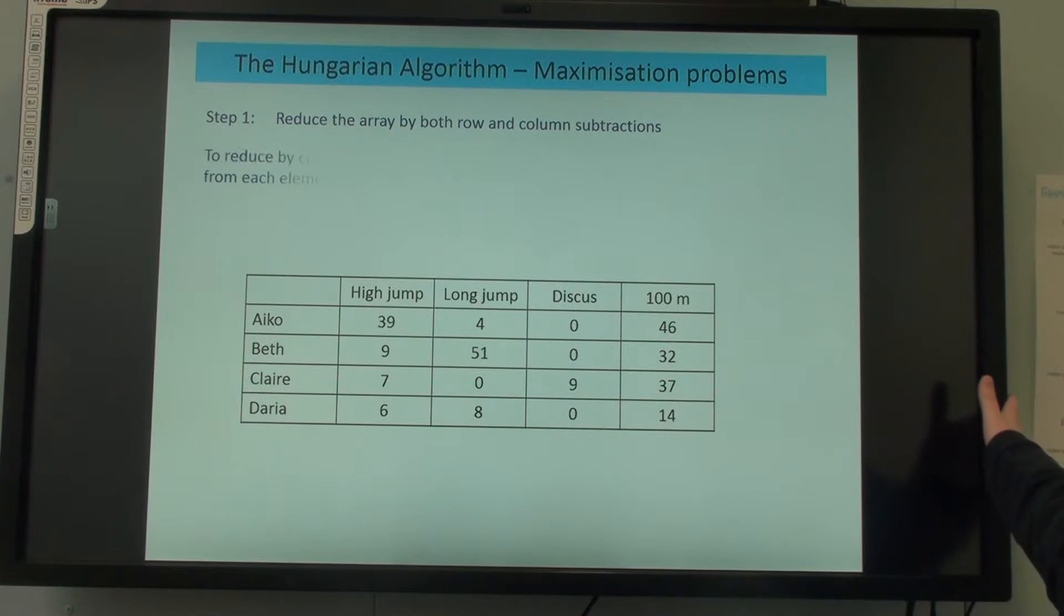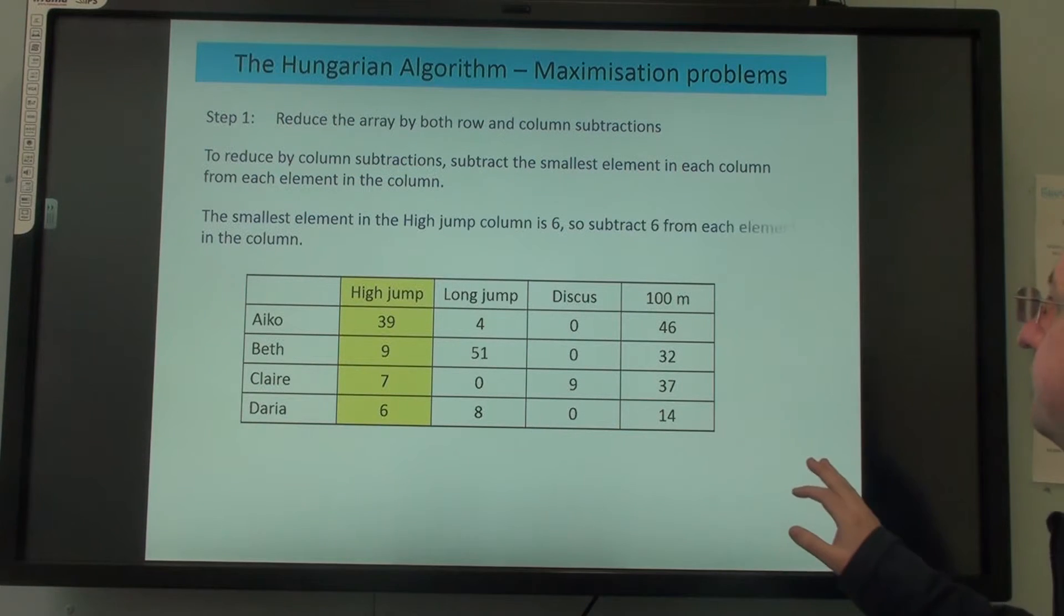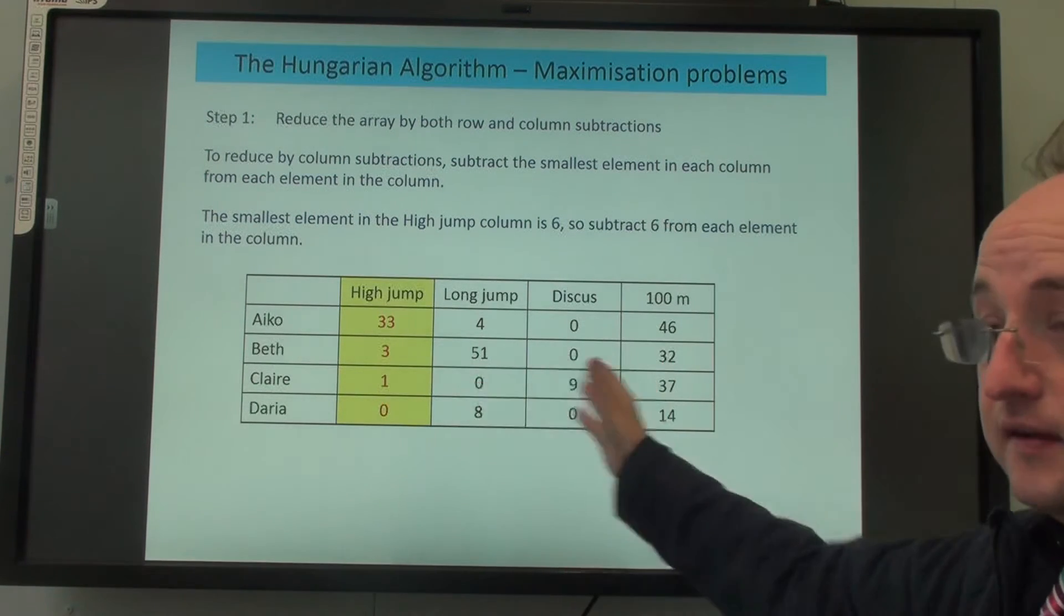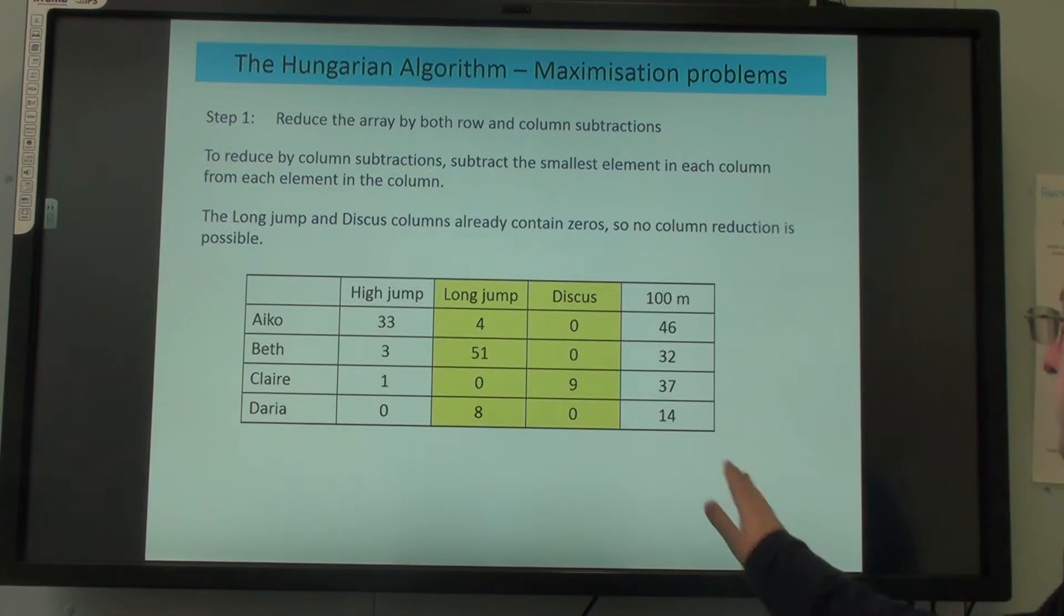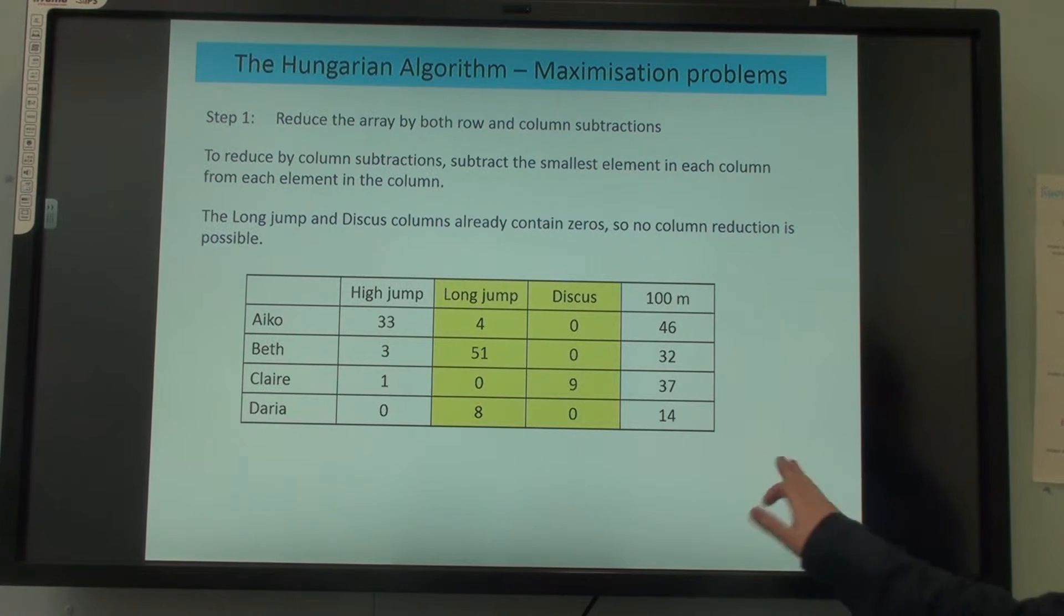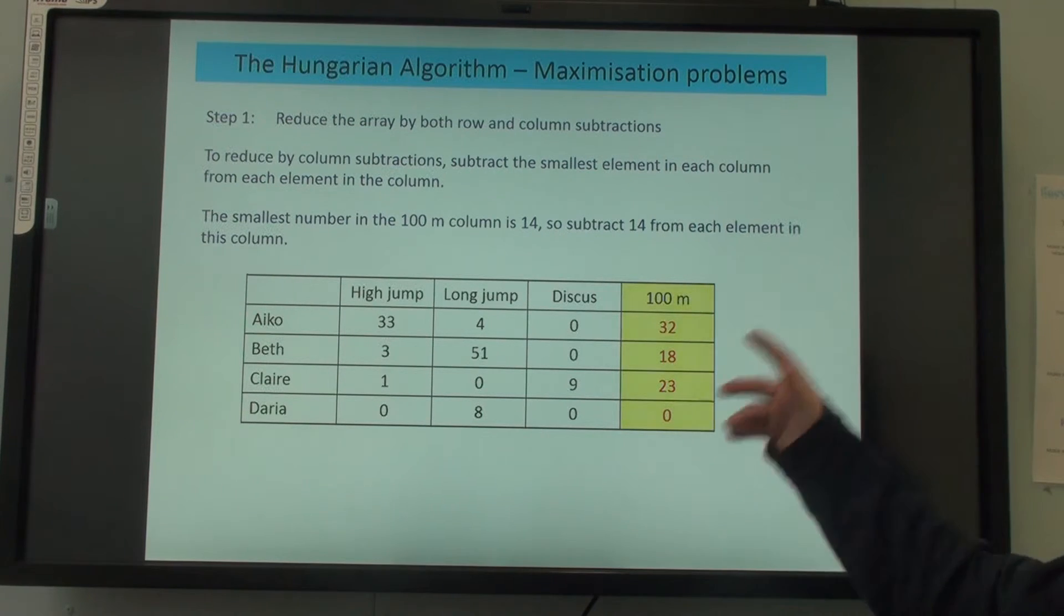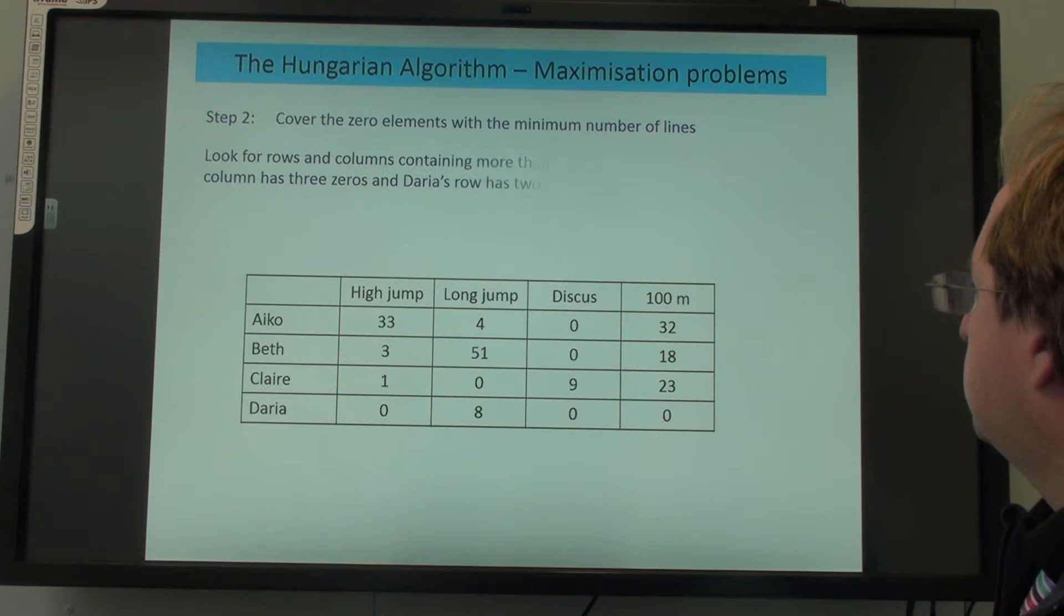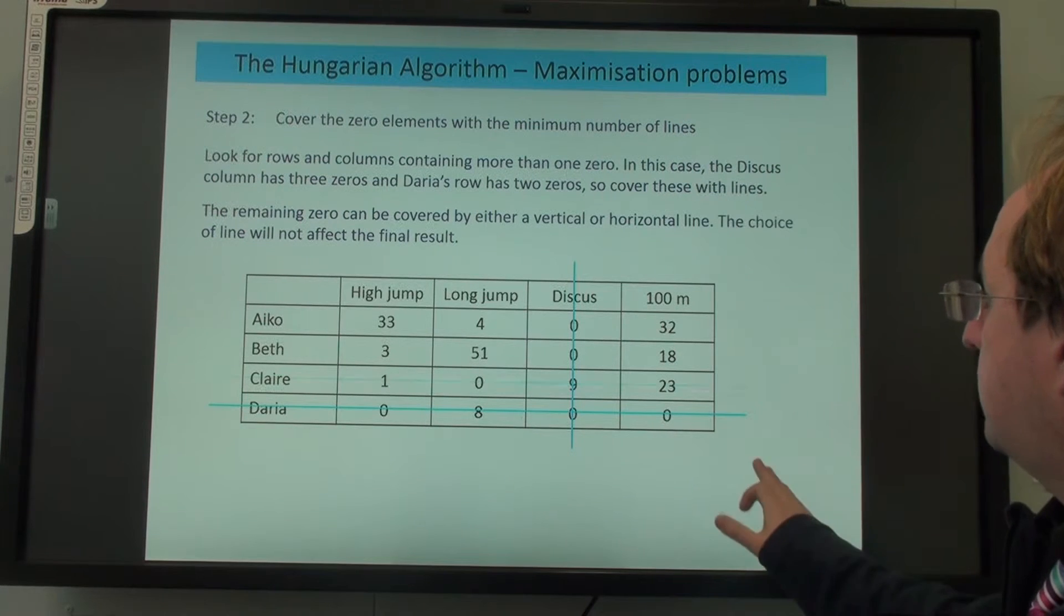You're not going to reduce the rows and get the best solution. So let's do the columns. I'm going to subtract 6 on there. We've got zero here and a zero here so we're not going to do anything to these columns because they're already okay, and then subtract the smallest one from here. We can now look to see if it's optimal. I would guess we're going to need four lines. One, two. I can do this one with three, so because I can do it in three it's not optimal.